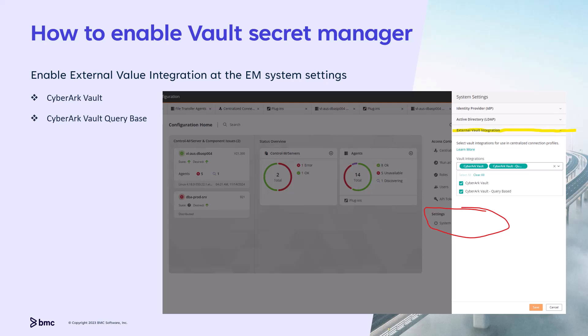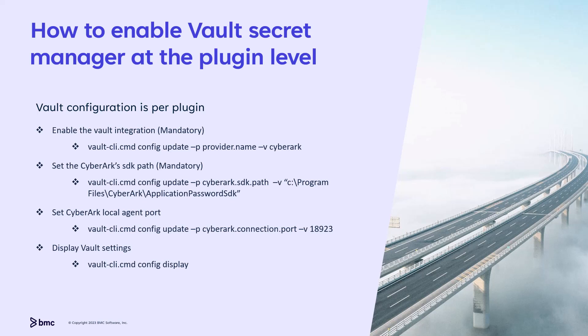To enable the use of Vault Secret Depository with CyberArk, first you need to enable two methods used to connect to CyberArk at the system level. Under the External Vault Integration in system settings, select both CyberArk and CyberArk with query-based method. This enables the EM to provide these options for external integration with plugins that support it. Next, enable external integration with each plugin by setting the provider to CyberArk for the relevant plugin, and then set the path to the SDK, which is included as part of the CyberArk CP installation. If the CyberArk CP agent is not using the default port, you also need to set the port used by the CP agent. You can review the current settings with the config display option.